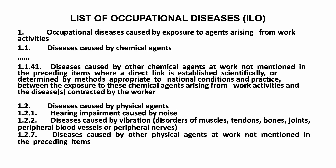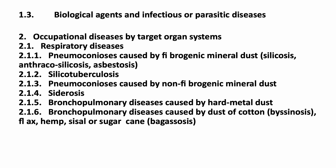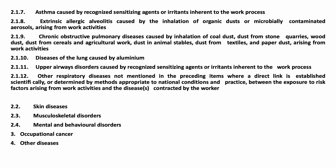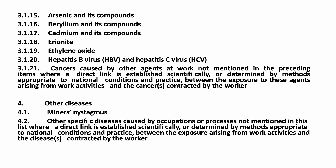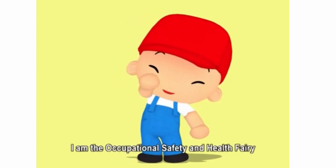The list of occupational diseases includes a first chapter of occupational diseases caused by exposure to agents arising from work activities, including diseases caused by chemical, physical, and biological factors. The second chapter covers occupational diseases by target organ systems: respiratory diseases, skin diseases, occupational cancer, and others.